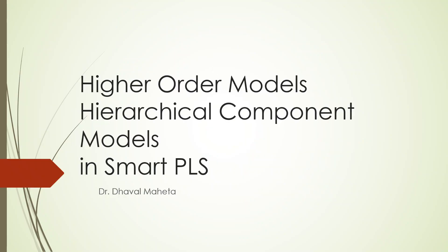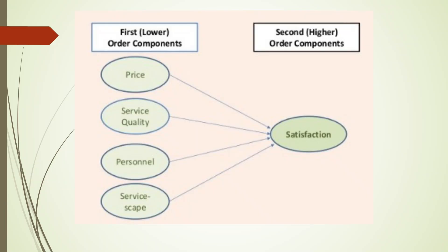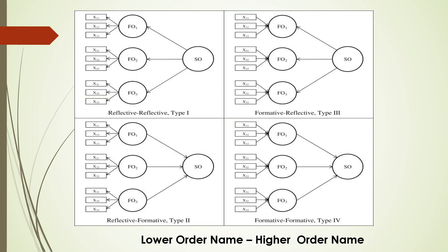Hello to all of you. Today we are going to discuss hierarchical models in SmartPLS, also known as higher-order models. In the lower order, we have price, service quality, personnel, and service cap — these are constructs captured with the help of measured variables. These constructs combine together to make one more construct called satisfaction. This is considered to be the higher-order, second-order, or second-degree model.